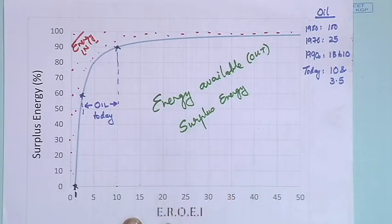EROEI denotes the surplus energy that is available to us for use. Part of the energy that we generate is used up for generating that energy itself. So EROEI is the ratio of the energy available to us over the energy we have to spend to get that available energy out. This is what we call net energy, and we looked at this curve.